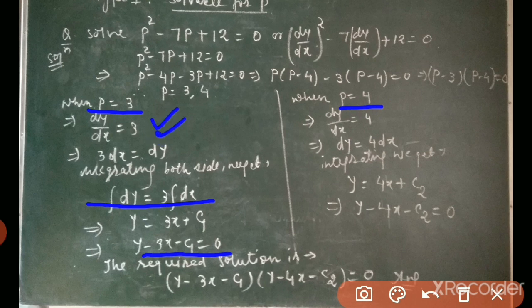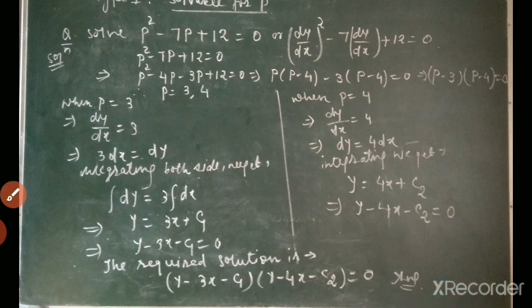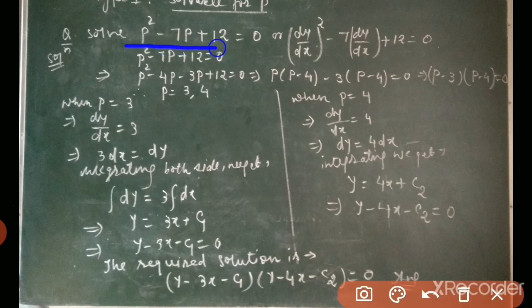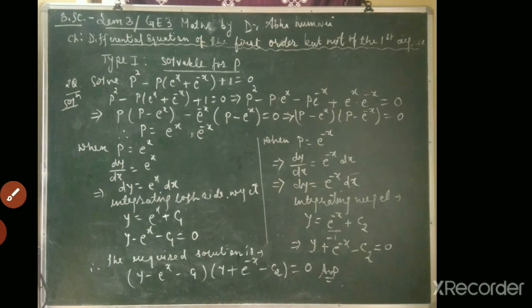When p = 4: dy/dx = 4, so dy = 4dx. After integration: y = 4x + c₂, written as y - 4x - c₂ = 0. Therefore the required solution is: (y - 3x - c₁)(y - 4x - c₂) = 0. This is our answer when the equation p² - 7p + 12 = 0 has a left-hand side factorizable into linear factors.